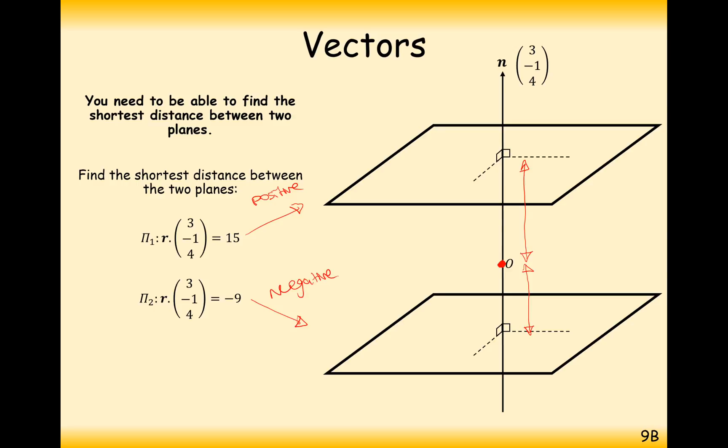So it's going to go in a very similar way. We're going to work out this distance here, this distance here, but this time we're going to add them together. First one is 15/√26, second one is going to be -9/√26. We can still subtract one from the other, because when we subtract a negative we're going to make it positive, and it's going to be 24/√26.